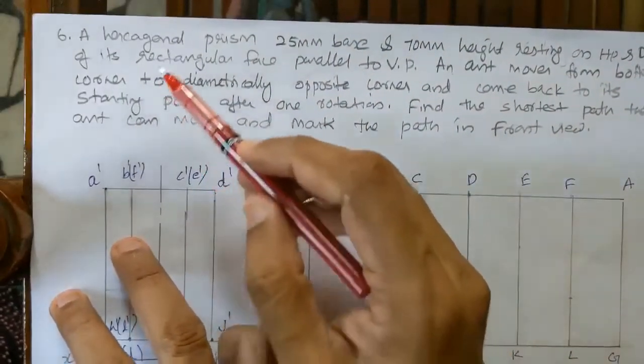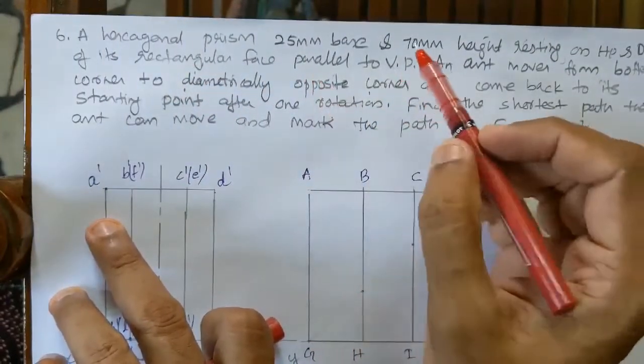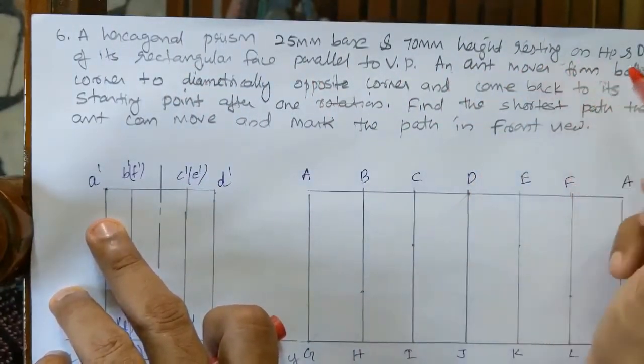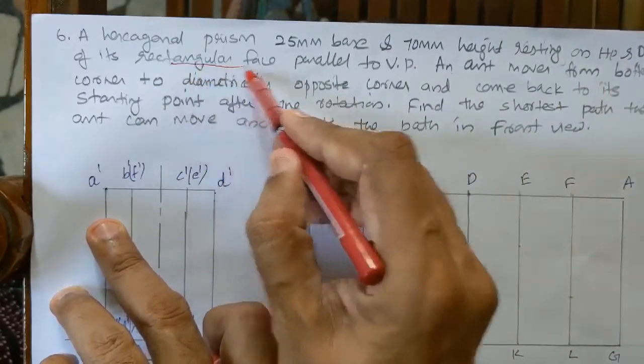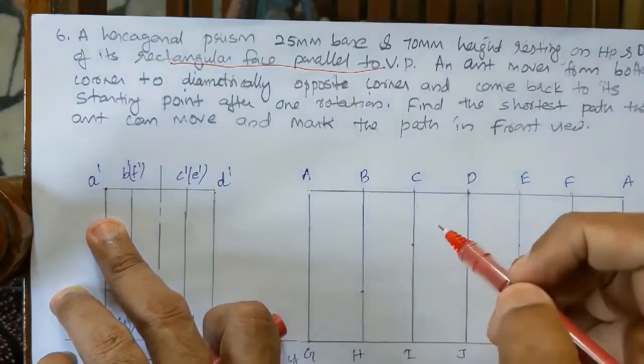Sixth problem: A hexagonal prism 25mm base, 70mm height resting on HP, and one of its rectangular face parallel to VP.